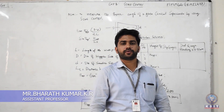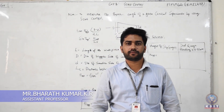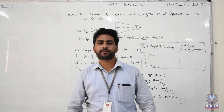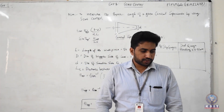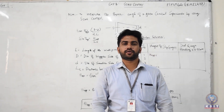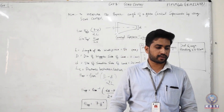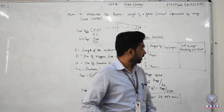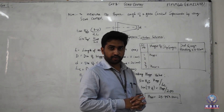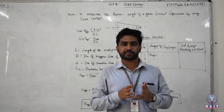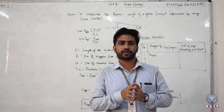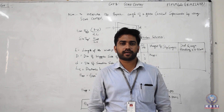Hello everyone. Today we will be doing an experiment at the sine center, which was the 8th experiment in the mechanical measurement and metallurgical lab. The sine center is used to measure the unknown angle with respect to the tapered cross-sectional area. The aim of the experiment is to measure the unknown angle of the tapered specimen. With respect to the sine center, we will always use it with respect to the conical surface.